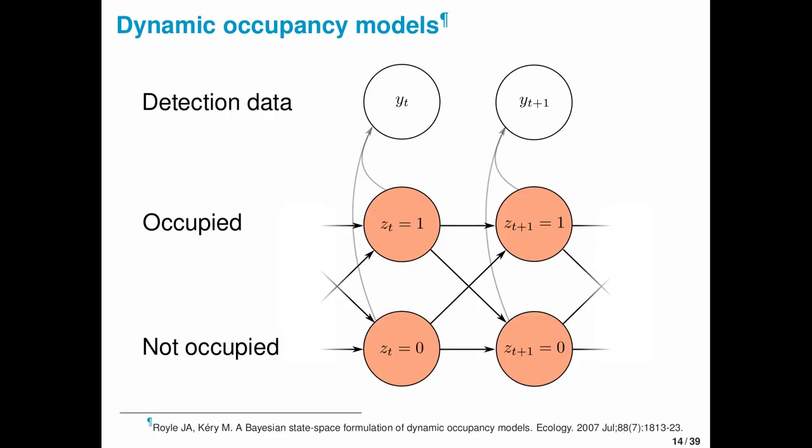In general, dynamic occupancy models are hidden Markov models that track the time evolution of occupancy states. The processes we care about are extinction, going from occupied to not occupied, and colonization, going from not occupied to occupied. The data again are imperfect and subject to false absences.